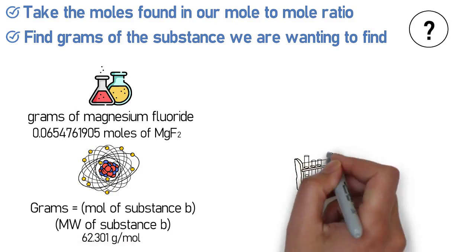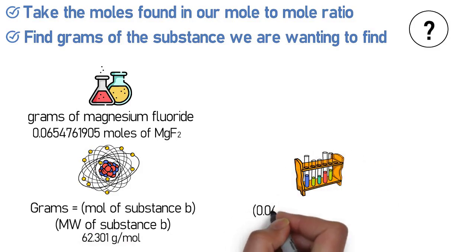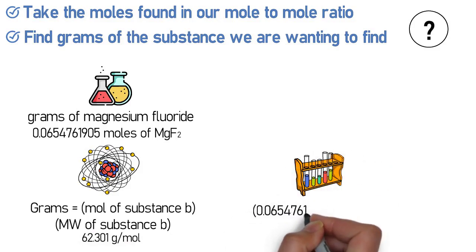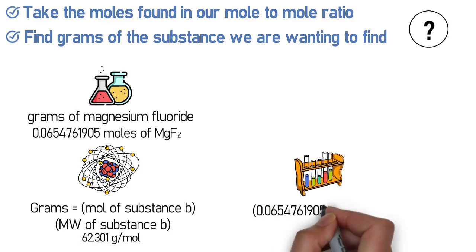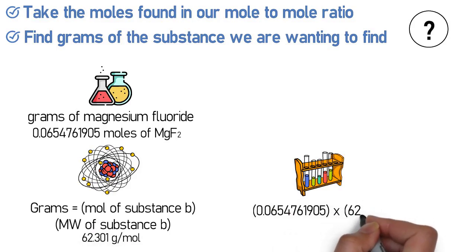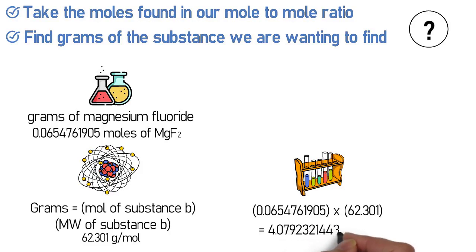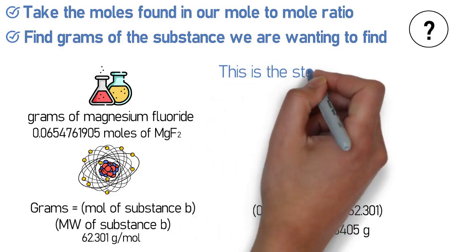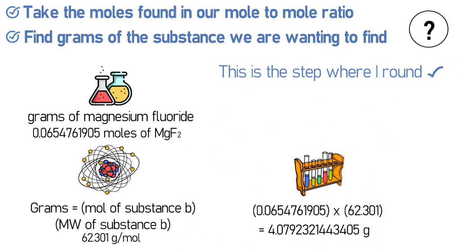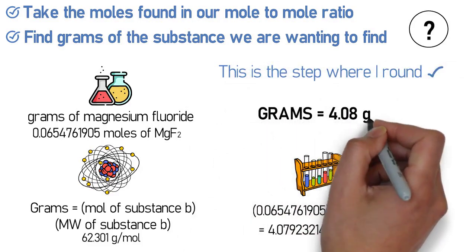Multiplying 0.0654761905 moles by 62.301 grams per mole gives us 4.0792321443405 grams. This is the step where I round — our final answer is 4.08 grams of magnesium fluoride.